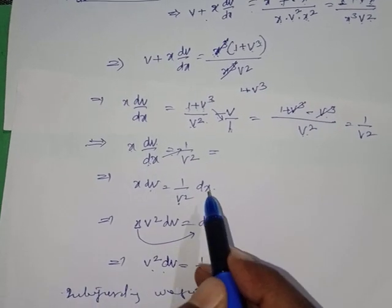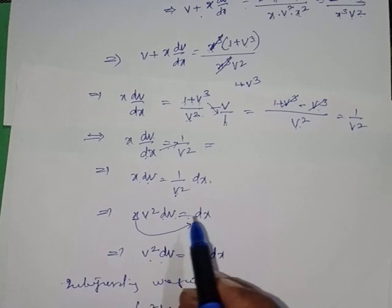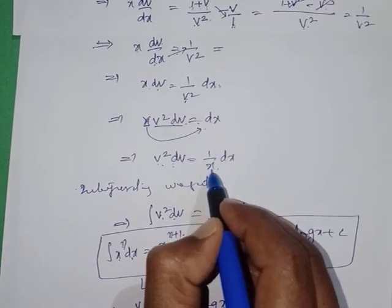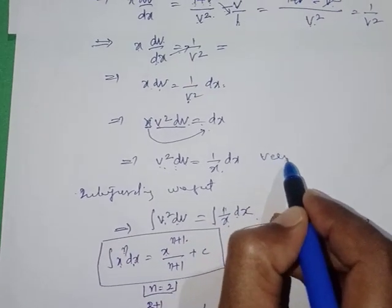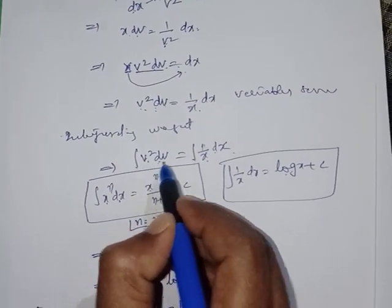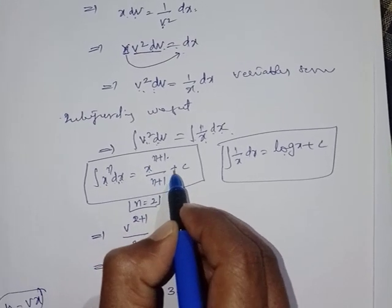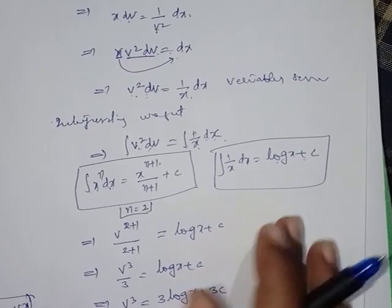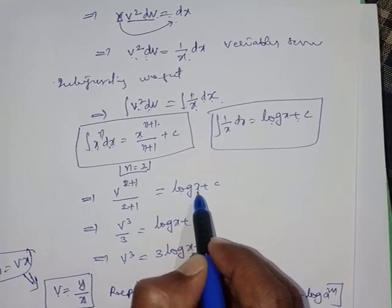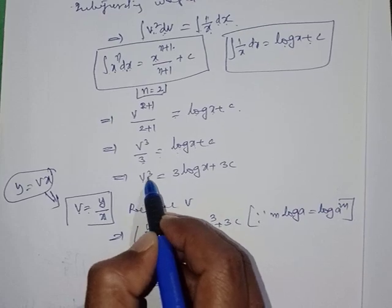Cross-multiplying: x·v²·dv = dx, then separating: v²·dv = (1/x)dx. Variables are separated. Integrating both sides using ∫xⁿdx = x^(n+1)/(n+1)+C and ∫(1/x)dx = log x + C, with n=2: v³/3 = log x + C. Transferring gives v³ = 3·log x + 3C.